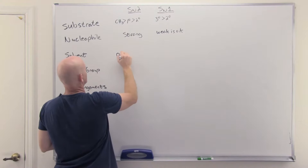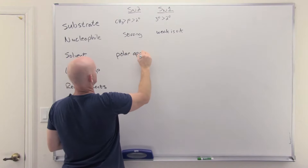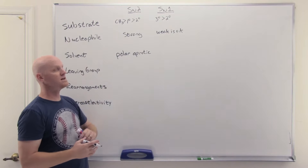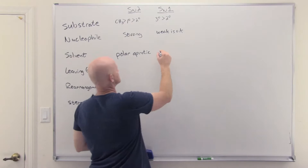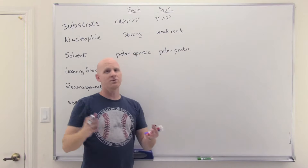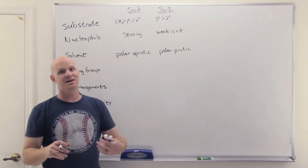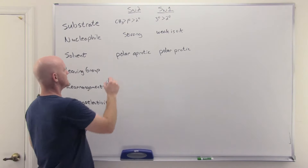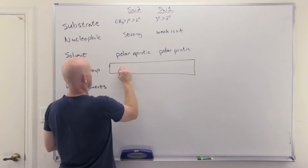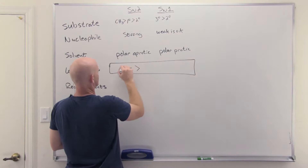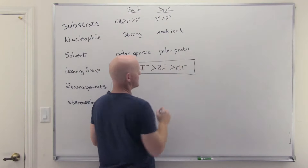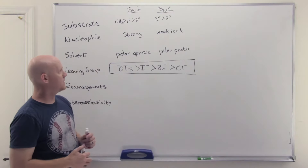For the solvent: most strong nucleophiles have a negative charge, and polar protic solvents would stabilize that negative ion a lot, slowing the reaction down — so for SN2 we want polar aprotic, strongly preferred. Whereas for SN1, your solvent has to be polar protic so that it can form strong ion-dipole interactions and stabilize those carbocations. For the leaving group, this is the one thing they have in common. OTs is the best, followed by iodide, followed by bromide, followed by chloride — exactly the same trend for both SN1 and SN2.